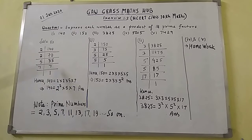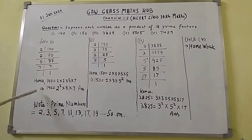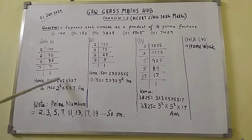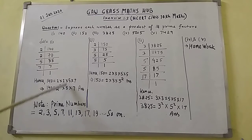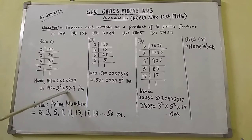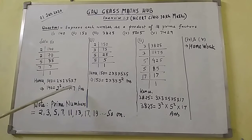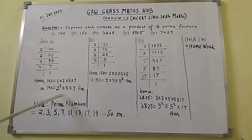Hence, 140 = 2 × 2 × 5 × 7. Since 2 appears twice, you can write it as 2² × 5 × 7. Here, 2, 5, and 7 are all prime numbers, so this is the correct answer.